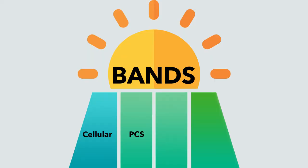Cellular, PCS, AWS, and LTE, which is divided between LTE for Verizon and LTE for AT&T. Each of these bands supports a unique set of frequencies. These bands also support different technologies like 2G and 3G for voice, and 4G for data and voice in some areas of the country.